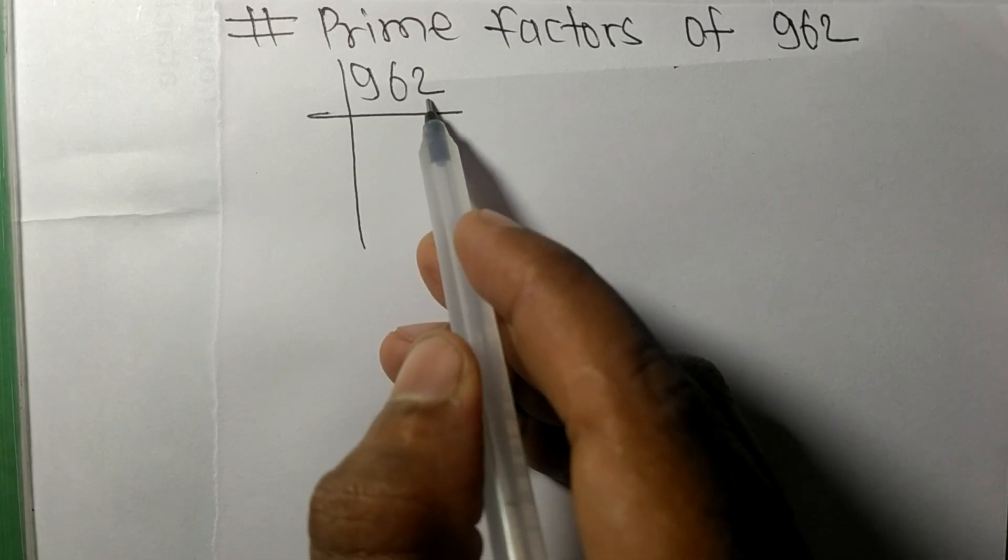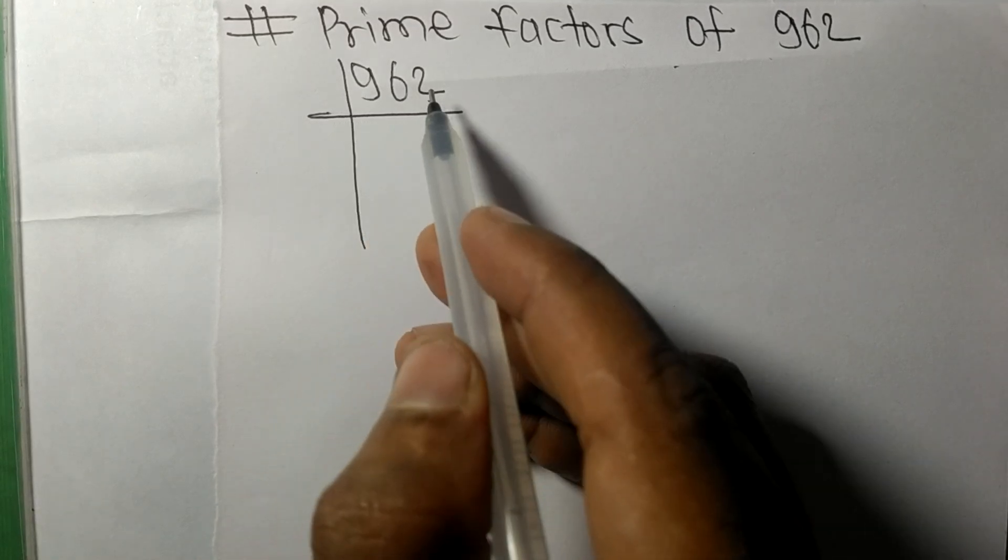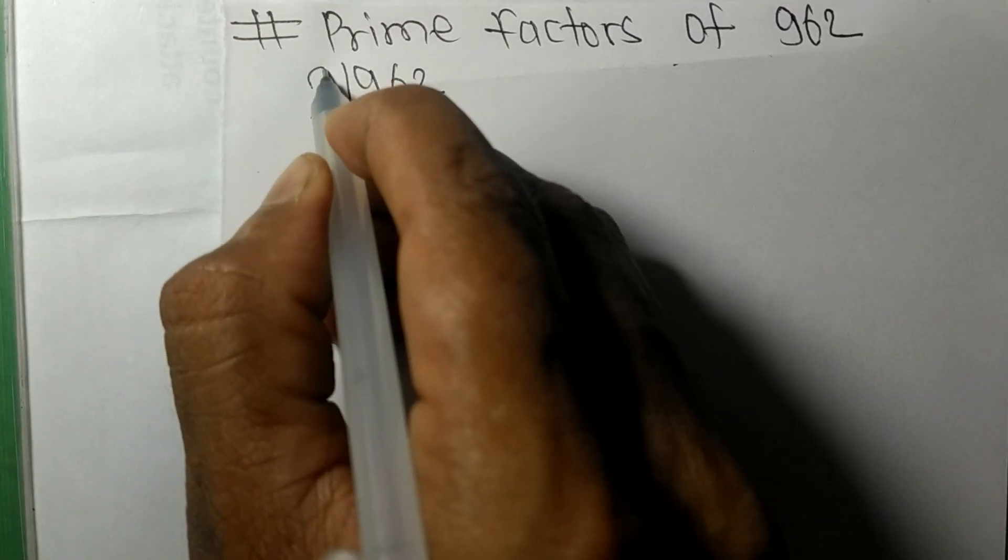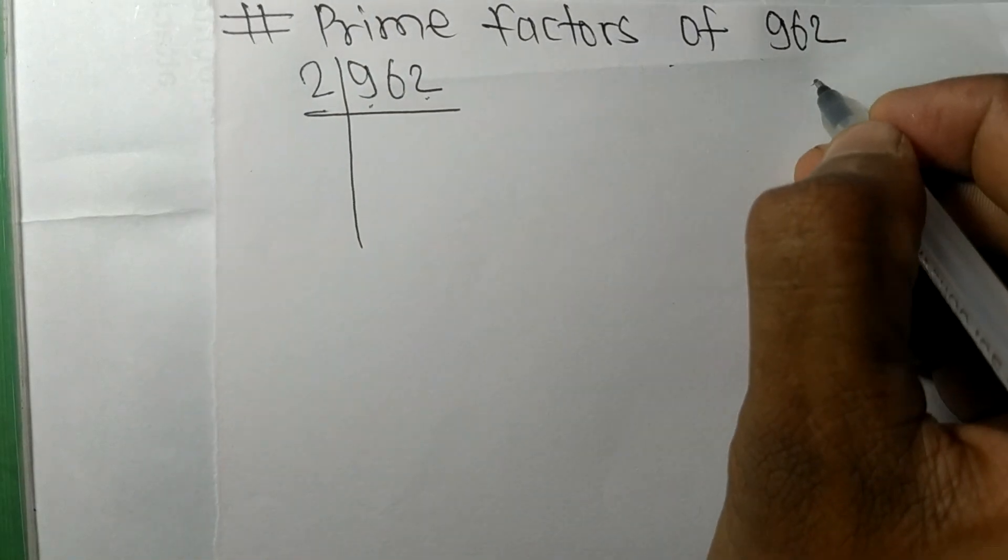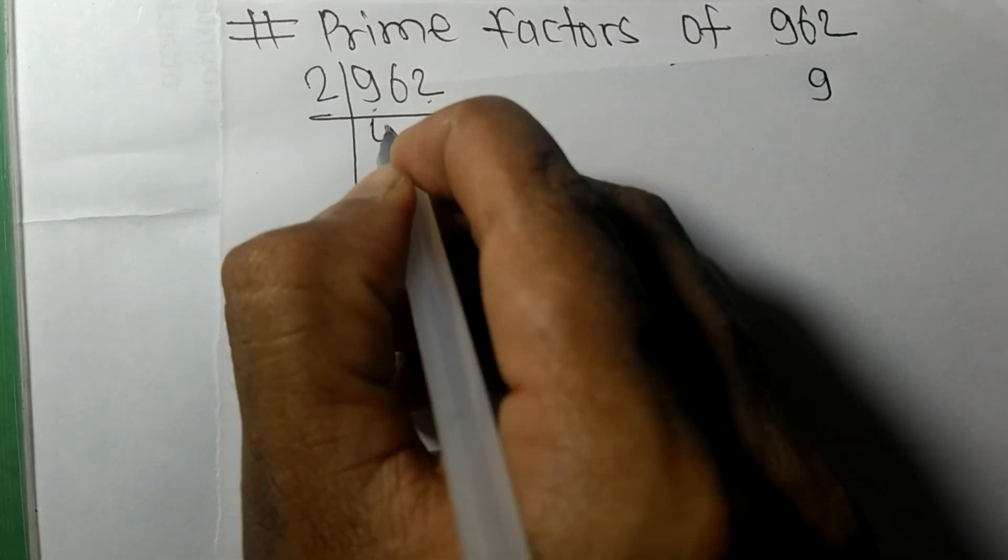First we have 9. 2 times 4 is 8. On subtracting we get 1. This 6, 16. 2 times 8 means 16, and 2 times 1 means 2.